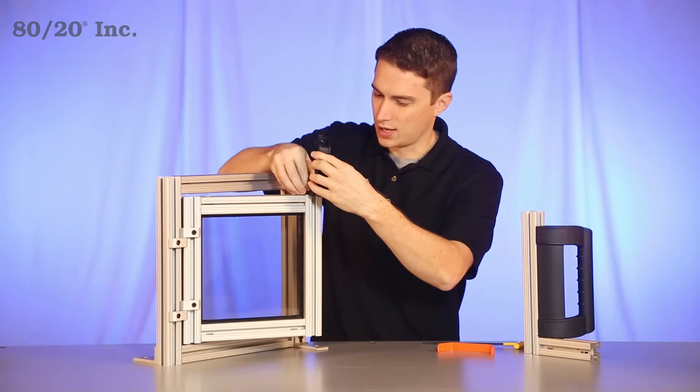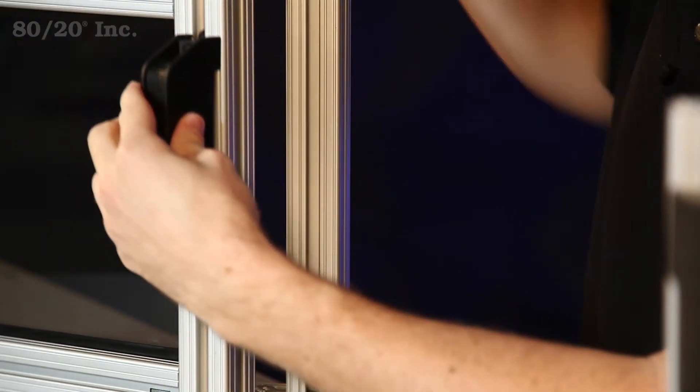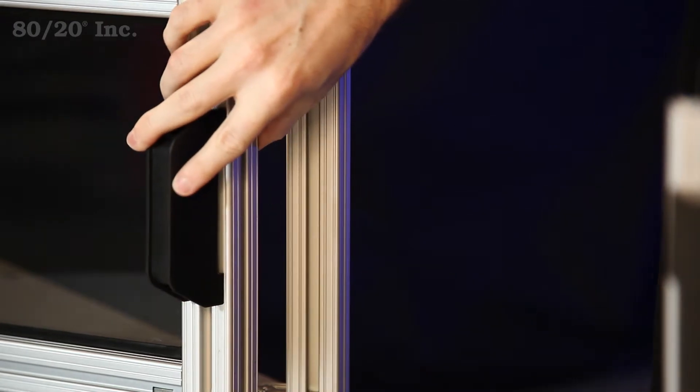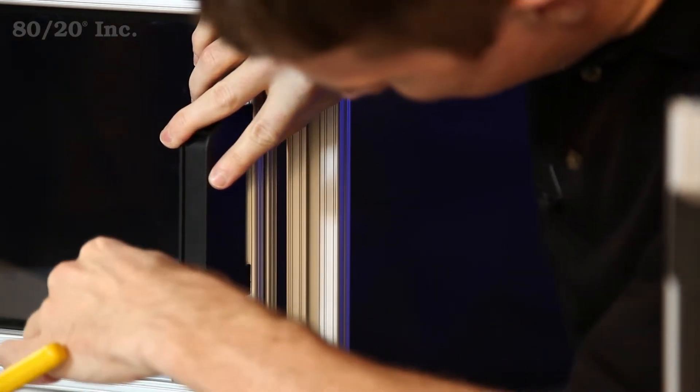We'll just slide this into the open T-slot. We'll put it where we want it. We'll grab our wrench and tighten it down.